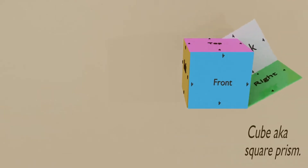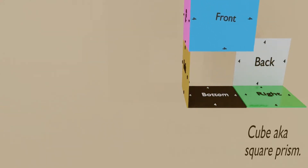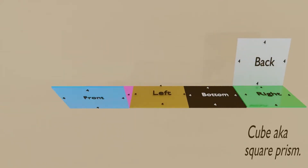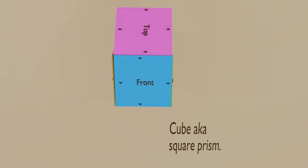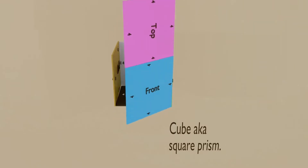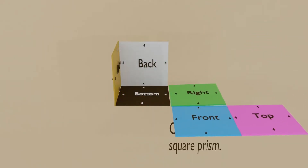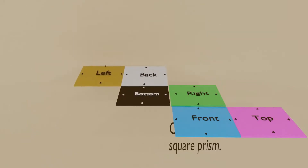One three-dimensional shape may have many nets. We can cut a three-dimensional shape in many different ways. For example, here is a square prism, commonly called a cube, that we have cut up in two different ways. By cutting it along different edges, we get a different net. That tells us that each three-dimensional shape may have several possible nets.